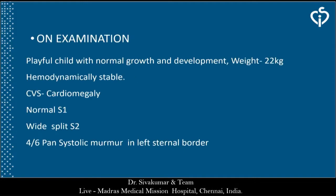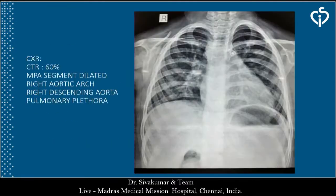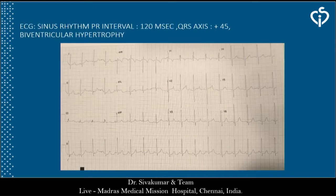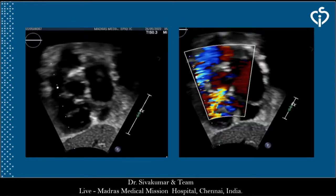On examination, she is a playful child with normal growth and development weighing 22 kg, hemodynamically stable. CVS examination shows cardiomegaly, normal S1, wide split S2, and a grade 4 pan-systolic murmur at the left sternal border. Chest X-ray shows levocardia with a cardiothoracic ratio of 60%, dilated MPA segment, right aortic arch, and pulmonary plethora. ECG shows sinus rhythm with PR interval of 120 ms, normal QRS axis of +45 degrees, and biventricular hypertrophy.